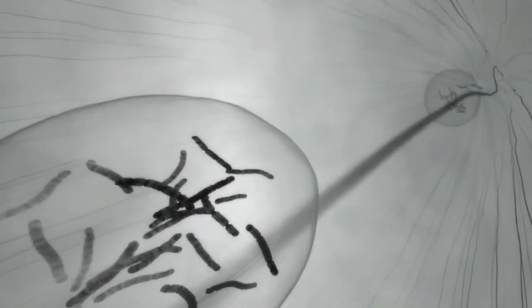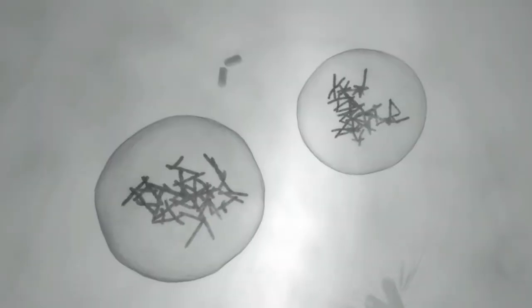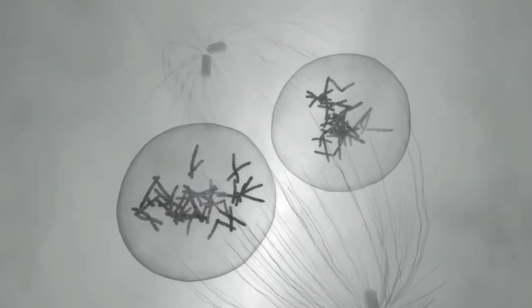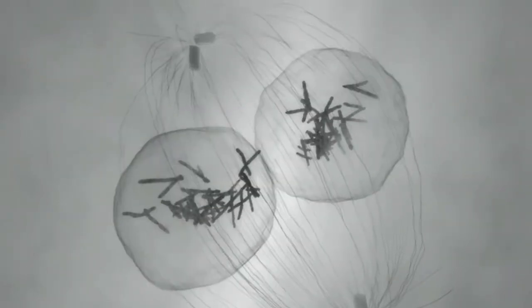As the male and female pronuclei form, spiderweb-like threads called microtubules pull them toward each other. The two sets of chromosomes join together, completing the process of fertilization.